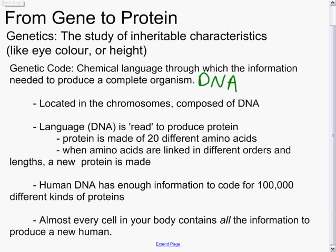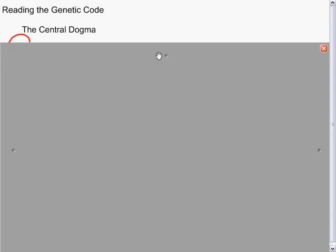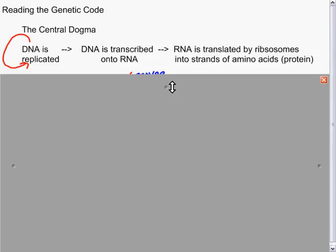In terms of the genetic code, what we're considering first is what's known in biology as the central dogma. DNA is replicated in the nucleus. That DNA is then transcribed onto RNA.